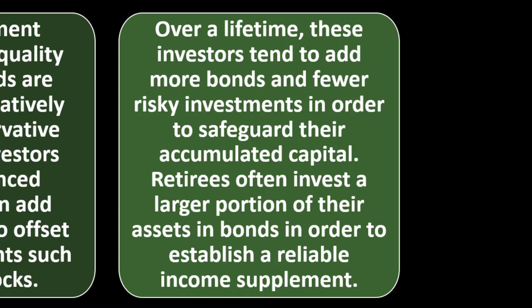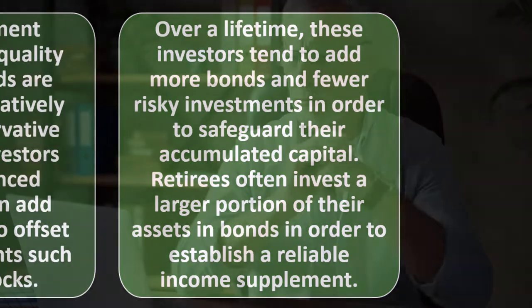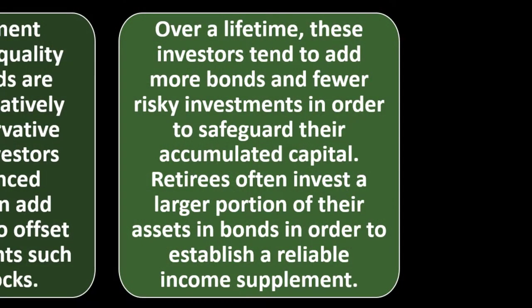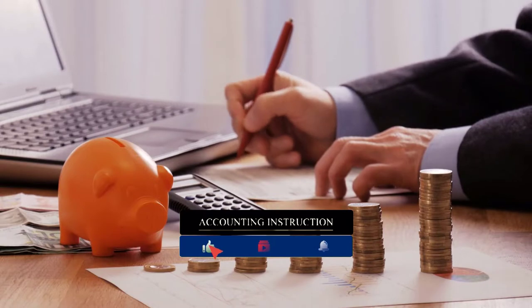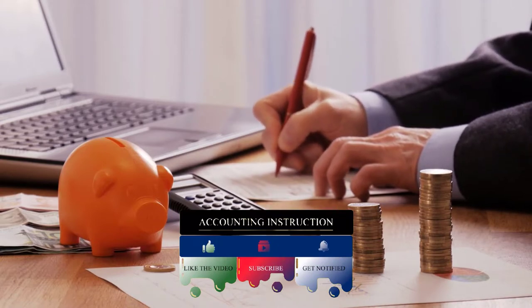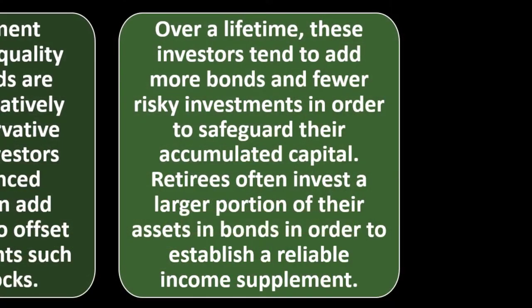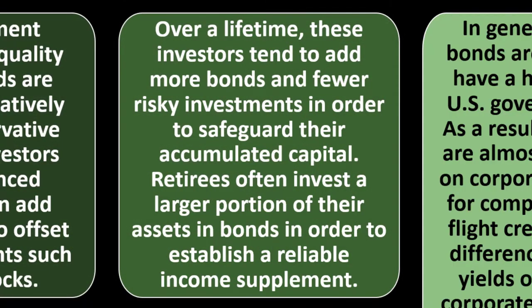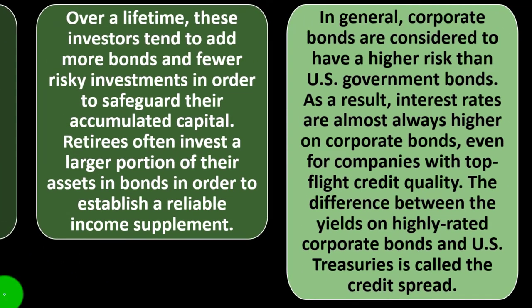Over a lifetime, investors tend to add more bonds and fewer risky investments to safeguard accumulated capital. Retirees often invest a large portion of their assets in bonds to establish a reliable income supplement. As we get older, the typical strategy is to shift from equities to bonds, because equities become riskier as your time horizon shortens. With less time to invest, market fluctuations have a more significant impact, making bonds a more stable option.